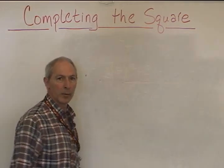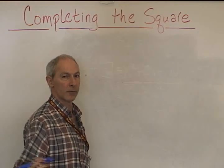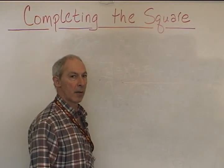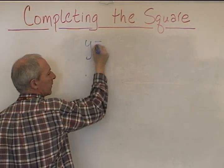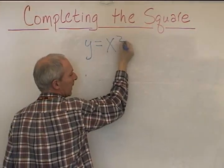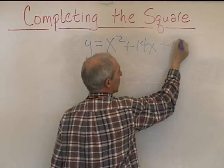Okay, here's our second problem in completing the square to get to vertex form for determining where the vertex is in our parabola. The equation is y = x² + 14x + 11.